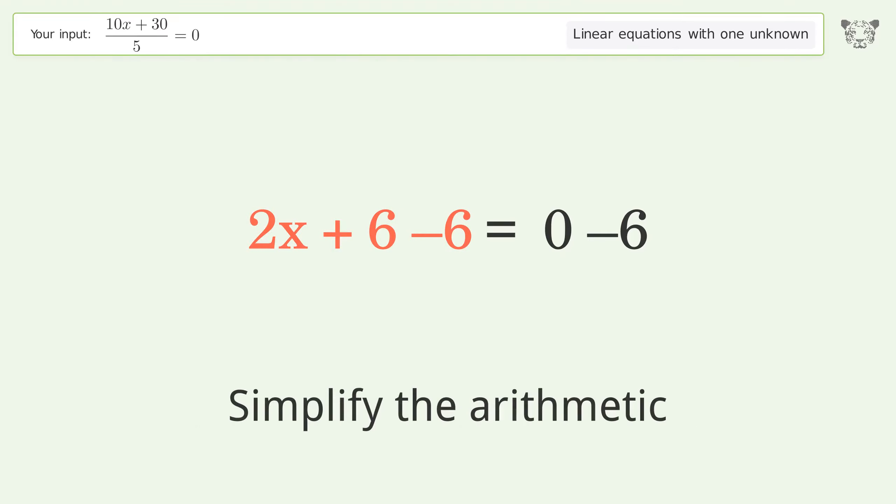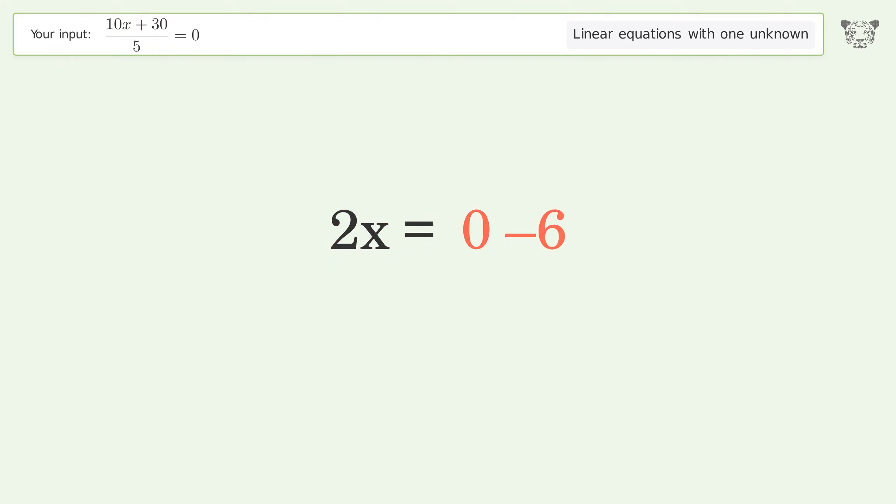Simplify the arithmetic. Isolate the x by dividing both sides by 2.